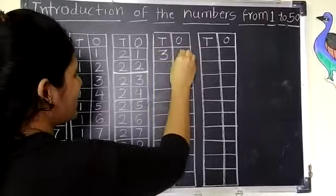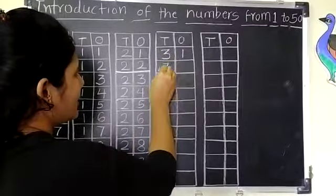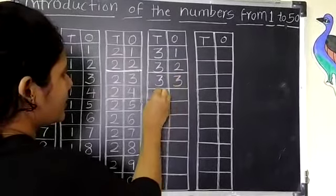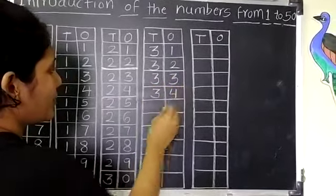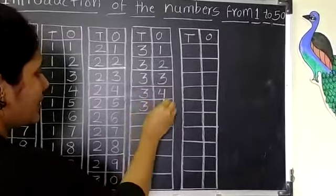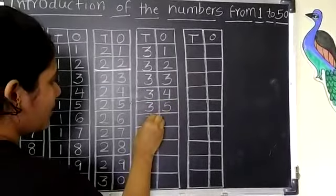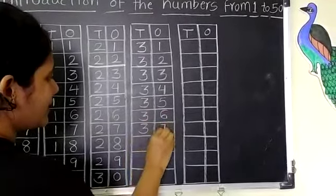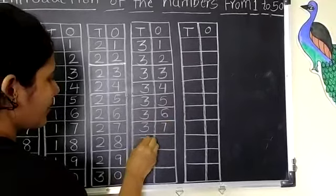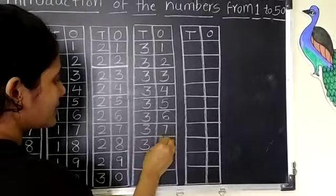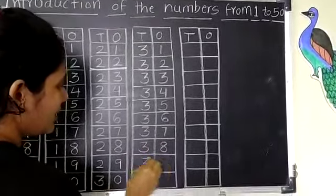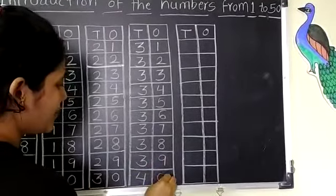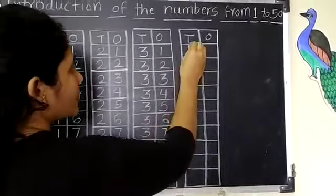3, 1, 31. 3, 2, 32. 3, 3, 33. 3, 4, 34. 3, 5, 35. 3, 6, 36. 3, 7, 37. 3, 8, 38. 3, 9, 39. 4, 0, 40.